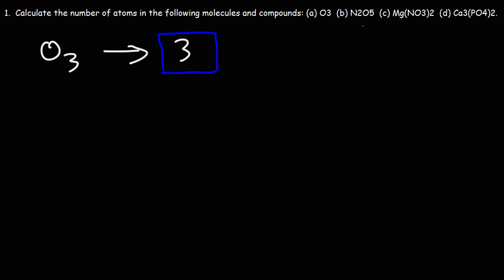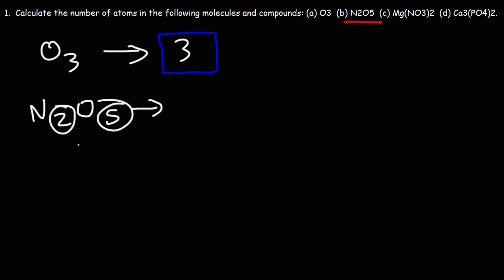Next, we have dinitrogen pentoxide, N2O5. This is one molecule, but the number of atoms in this molecule is 2 plus 5, which is 7. So this molecule has two nitrogen atoms and five oxygen atoms.